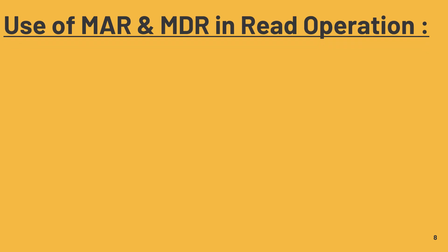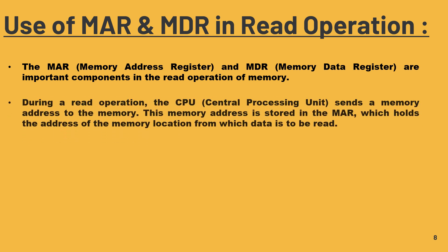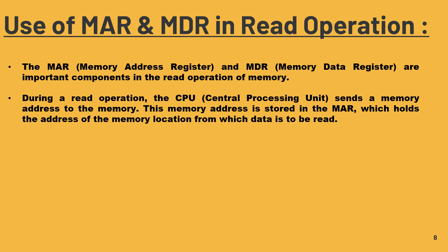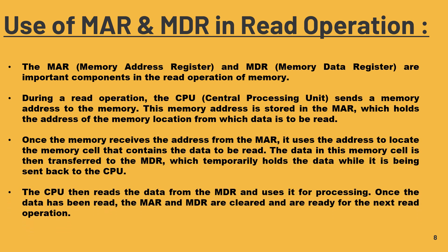Now we come to a very important topic: the use of MAR and MDR in a read operation. All registers such as program counter, instruction register, and accumulator are important in the read operation, but MAR and MDR are two key components. First, the CPU sends a memory address to memory, but it is stored temporarily in the MAR. Memory then receives the address from MAR and uses it to locate the memory cell containing the data to be read. This data is then transferred to the MDR while being sent back to the CPU. Finally, the CPU reads the data from the MDR and uses it for processing. Once the data has been read, the MAR and MDR are cleared and ready for the next read operation.